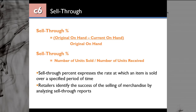Sell through percent can also be calculated by number of units sold divided by number of units received. This sell through percent expresses the rate at which an item is sold over a specified period of time. A retailer can identify the success of selling merchandise by analyzing the sell through report.